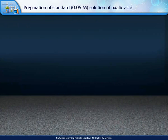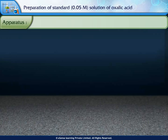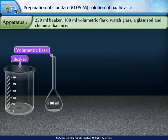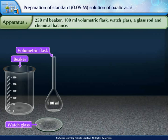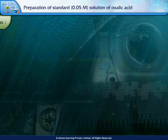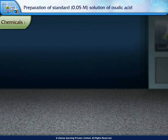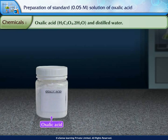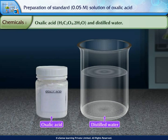The apparatus required are: a 250 ml beaker, a 100 ml volumetric flask, a watch glass, a glass rod, and a chemical balance. The chemicals required are oxalic acid and distilled water.